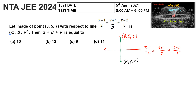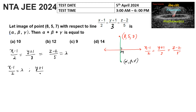Let us consider the foot of the perpendicular as point M, and take the general point on the given line: x−1/2 = y−1/3 = z−2/5 = lambda. So x = 2lambda + 1, y = 3lambda − 1, and z = 5lambda + 2.